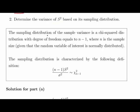So the sampling distribution of the variance is a chi-square distribution with degrees of freedom equal to n minus 1, and n is the sample size, given that the random variable of interest is normally distributed, which is the case here.